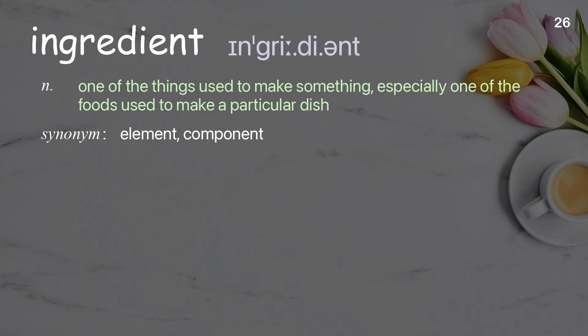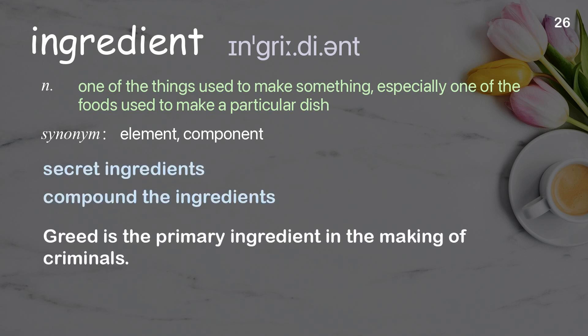Ingredient: One of the things used to make something, especially one of the foods used to make a particular dish. Examples: secret ingredients, compound the ingredients. Greed is the primary ingredient in the making of criminals.